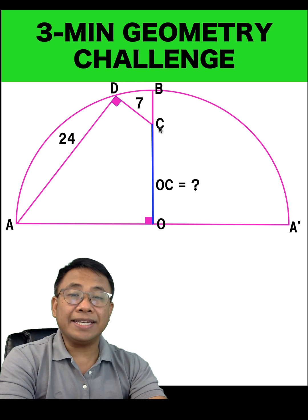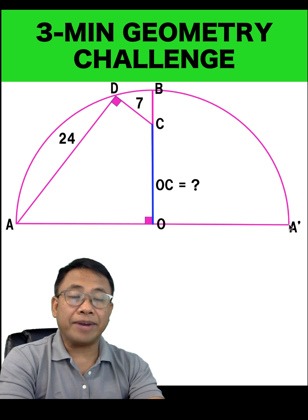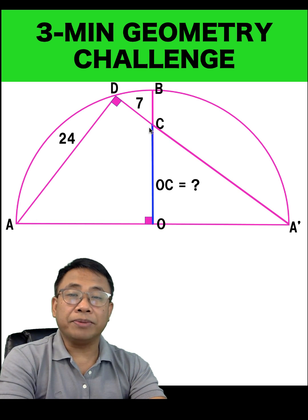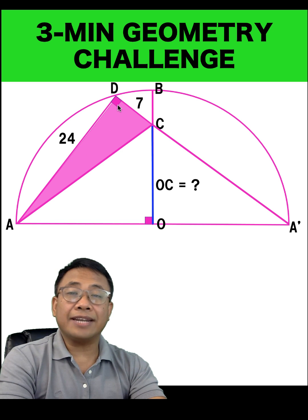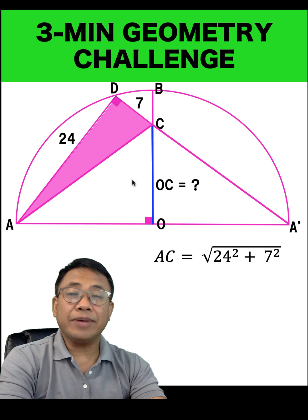So when we extend segment DC in the direction of C, we know that it will intersect A' this way. Now, let's connect point A to point C and form this right triangle ADC. We know that the length of leg AD is 24 units, and the length of leg DC is 7 units. And since the triangle is a right triangle, we can now find the length of segment AC.